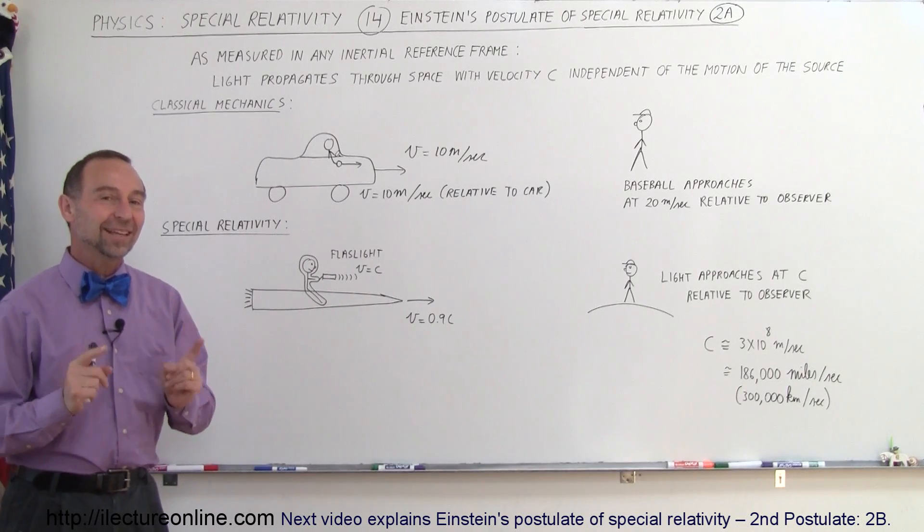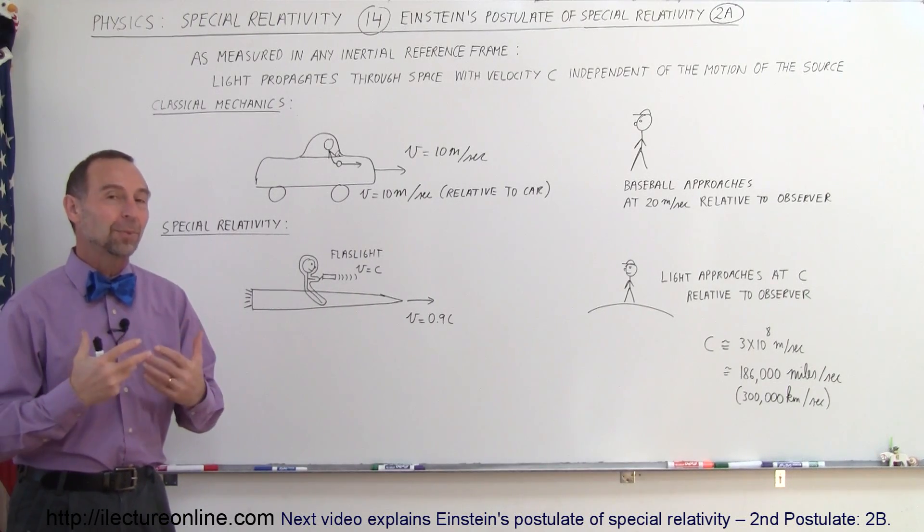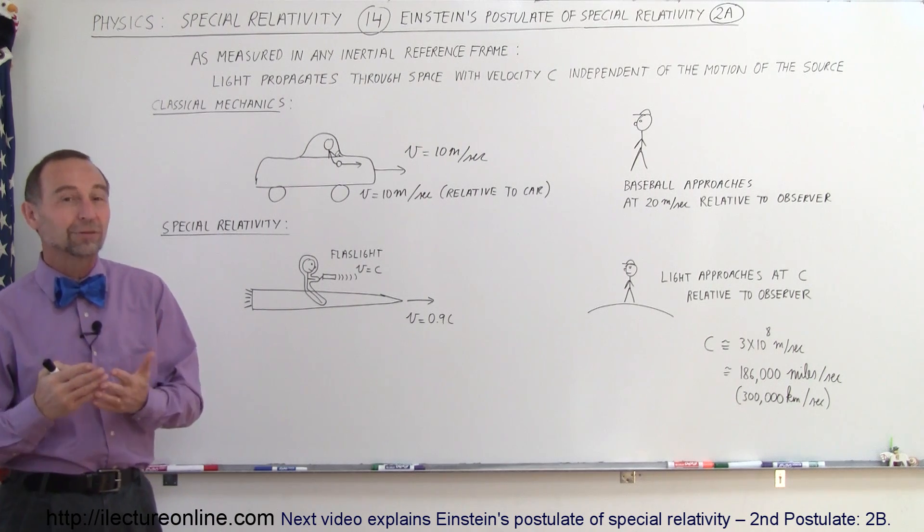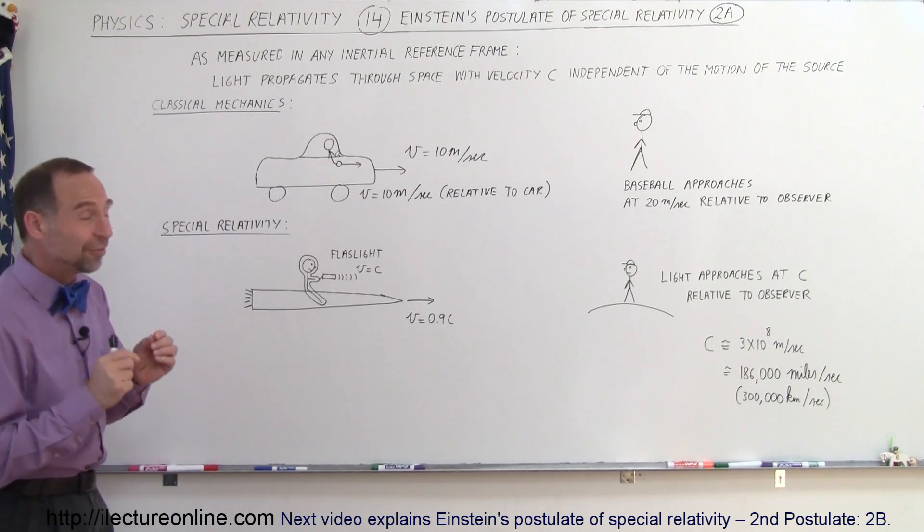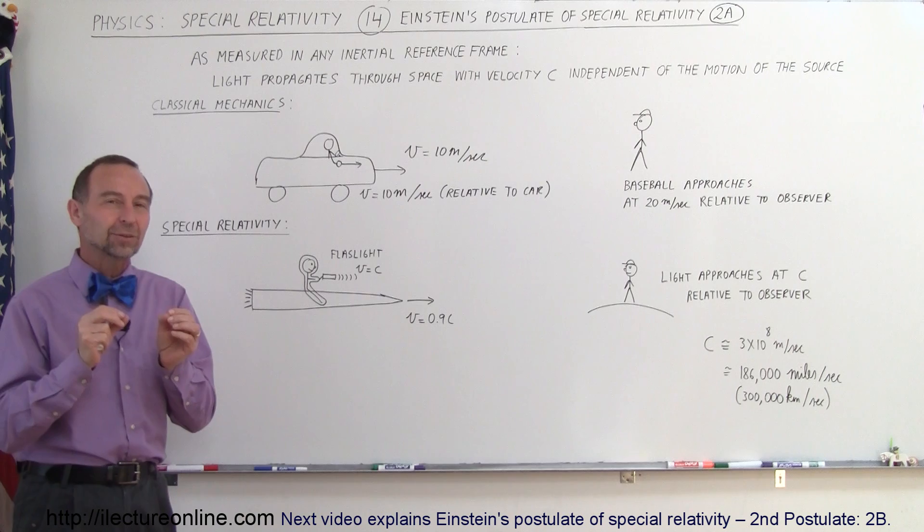Welcome to Electronline. Now the second postulate that Einstein came up with, and probably the most crucial one for special relativity, is the fact that he realized that the speed of light was a constant.